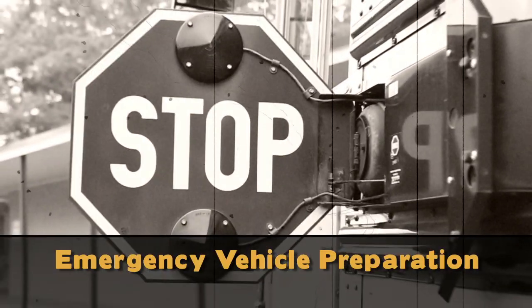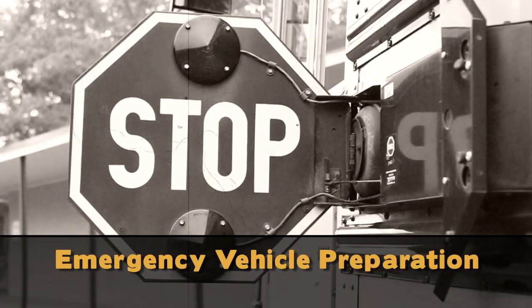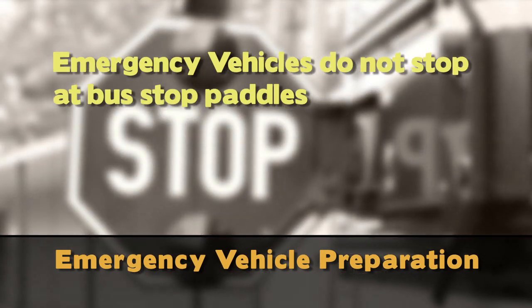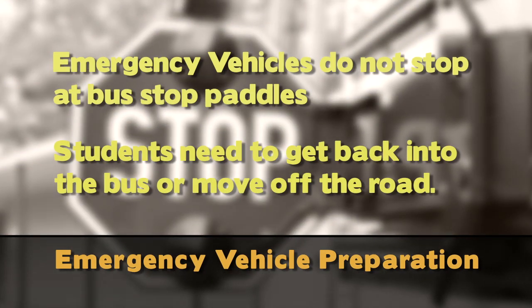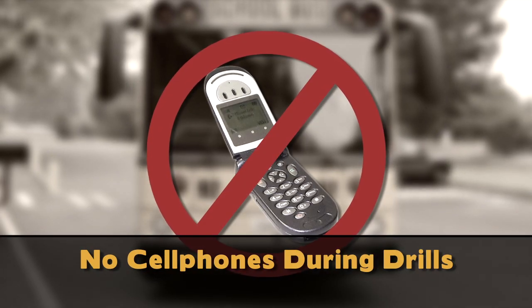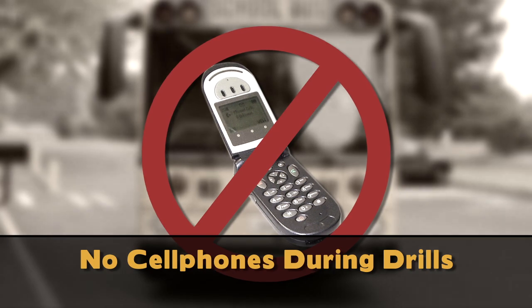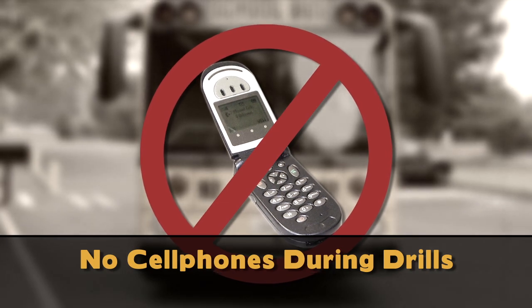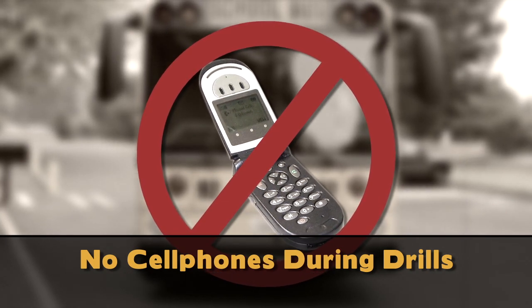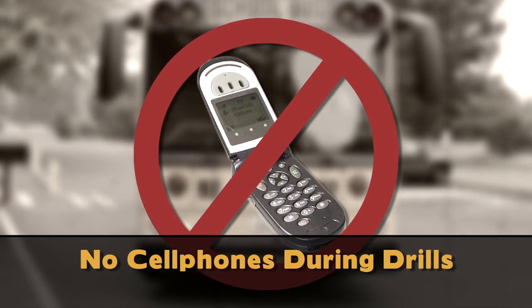Emergency vehicles headed to an emergency situation will not stop for the bus stop paddle. Students need to be asked to get back into the bus or move quickly and completely off the roadway. Students should not use a cell phone while performing a practice emergency exit drill, as this may cause an interruption with communication and service to them. Be sure you have all their attention.